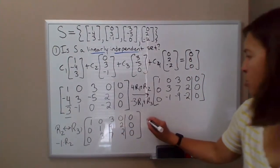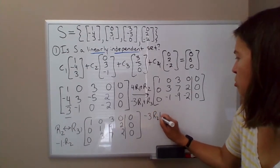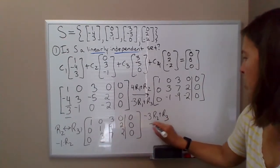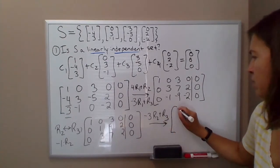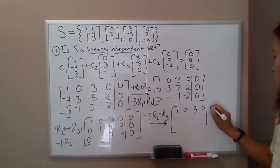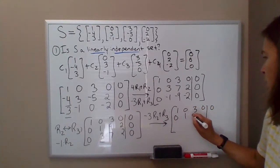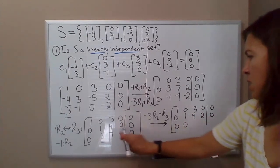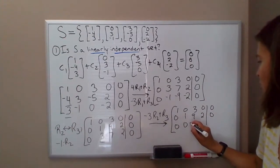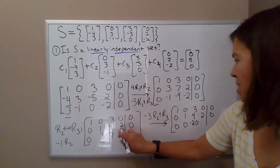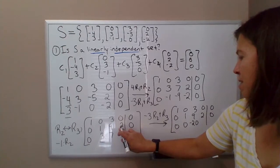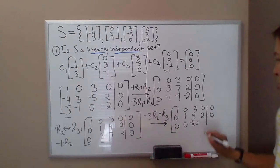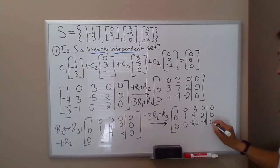And then I'll do negative three row two plus row three to get a zero in this position here. So that'll give us zero, negative 27, so negative 26 plus two, so negative four, and then zero plus zero.